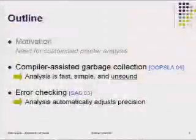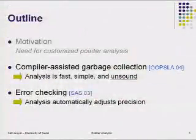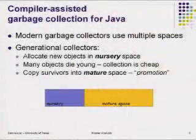We need to stop trying to solve the pointer analysis problem in isolation. Instead, we need to recognize it's really a family of problems. We should take into account exactly what the client needs from pointer analysis and evaluate the algorithm directly in terms of how it benefits the client, customizing algorithmic features for the client, hopefully automatically. Here's the outline of the talk: first, compiler-assisted garbage collection, and then a pointer analysis for error checking that automatically adjusts its precision.